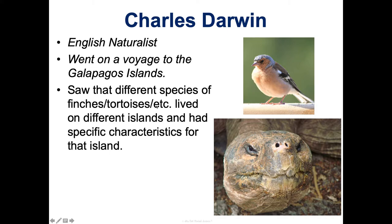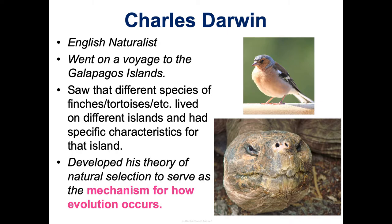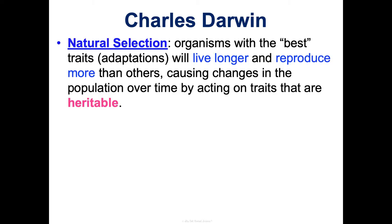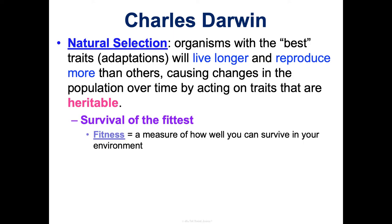Darwin studied all the different species that lived on those different islands. He saw that species on different islands had specific characteristics that helped them survive on their specific island, but they also had similarities. From analyzing these species, he came up with a mechanism for evolution called natural selection. Natural selection says that organisms with the best traits — called adaptations — will live longer and reproduce more than other organisms, and thus over time we'll see changes in the population. This is known as survival of the fittest.